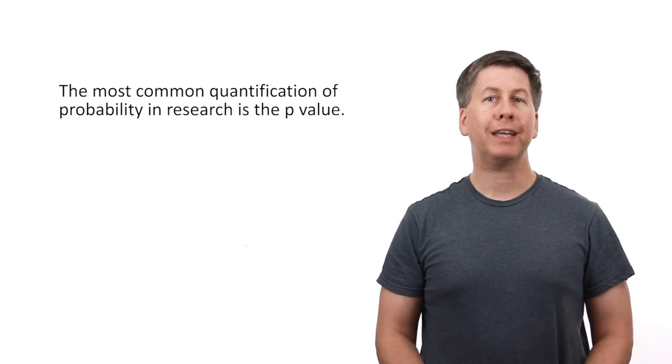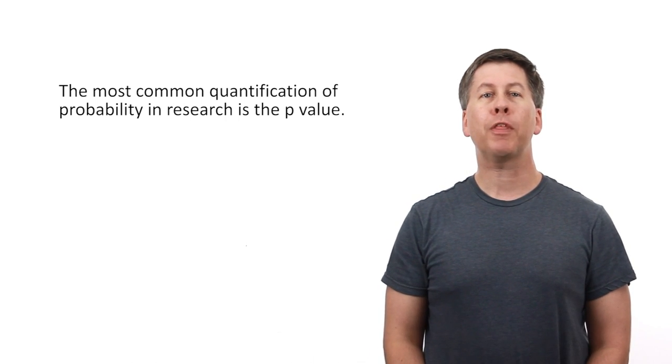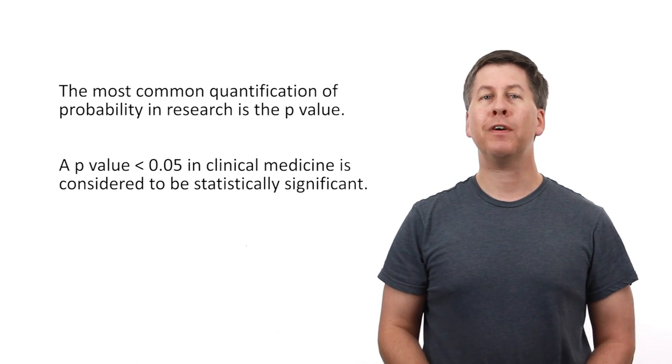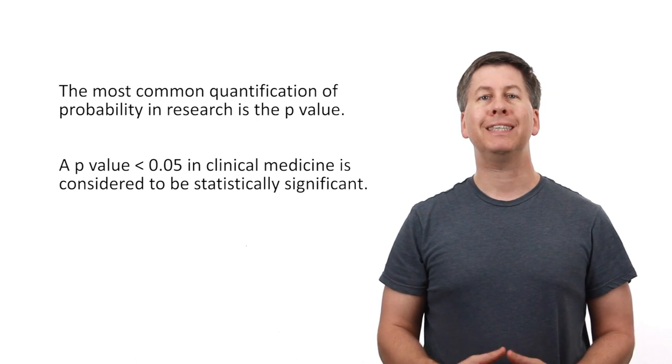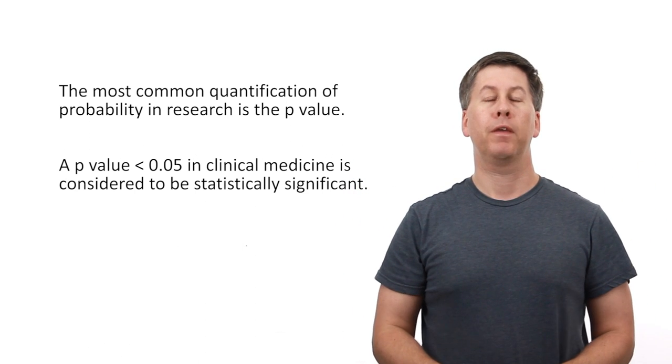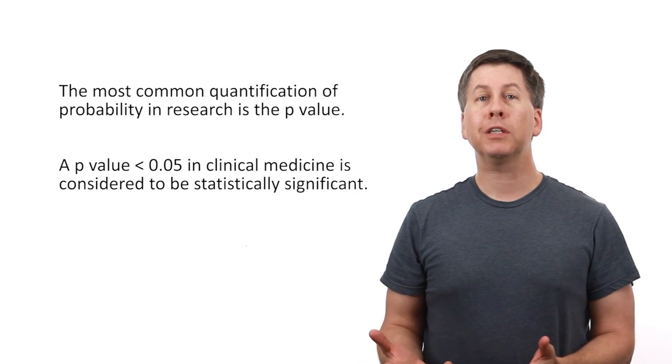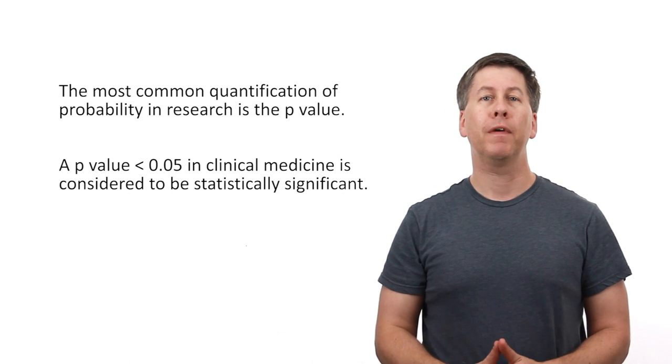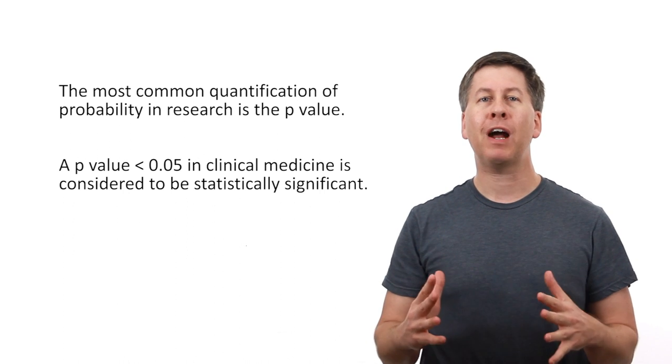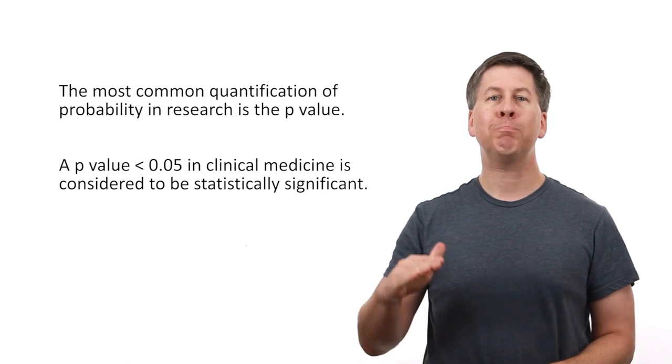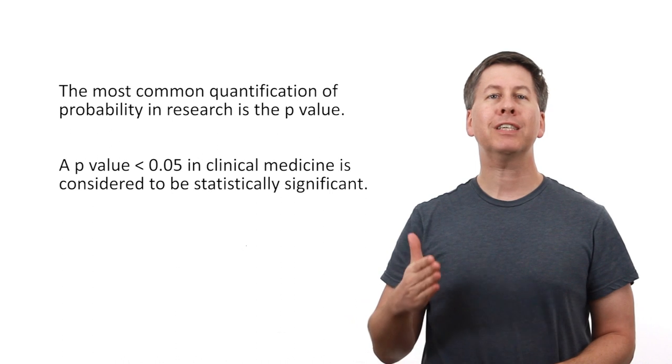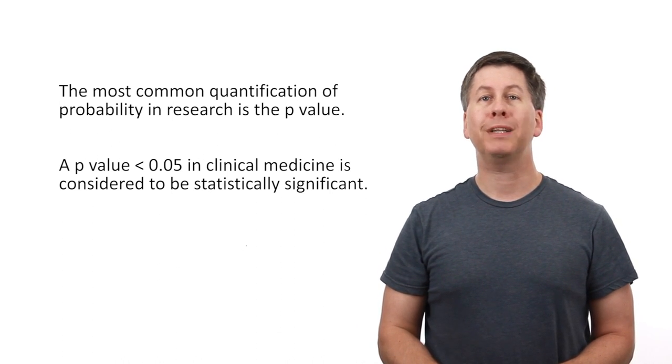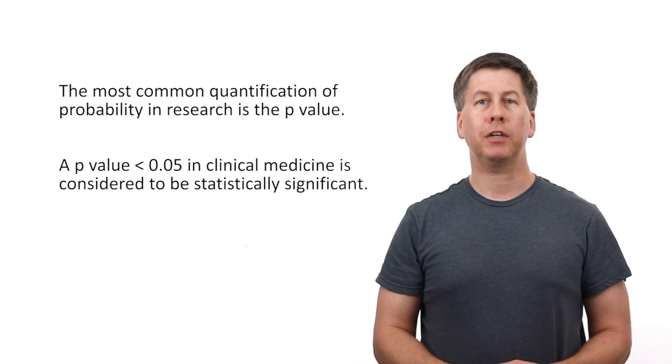By a large margin, the most common quantification of probability in research is something called the p-value, and a cutoff of a p-value less than 0.05 in clinical medicine is considered to be statistically significant. What the p-value does and doesn't represent is really confusing, and in the interest of time, I'm going to greatly simplify the explanation by just stating that the smaller the p-value, the less likely the results of the study were from chance alone.